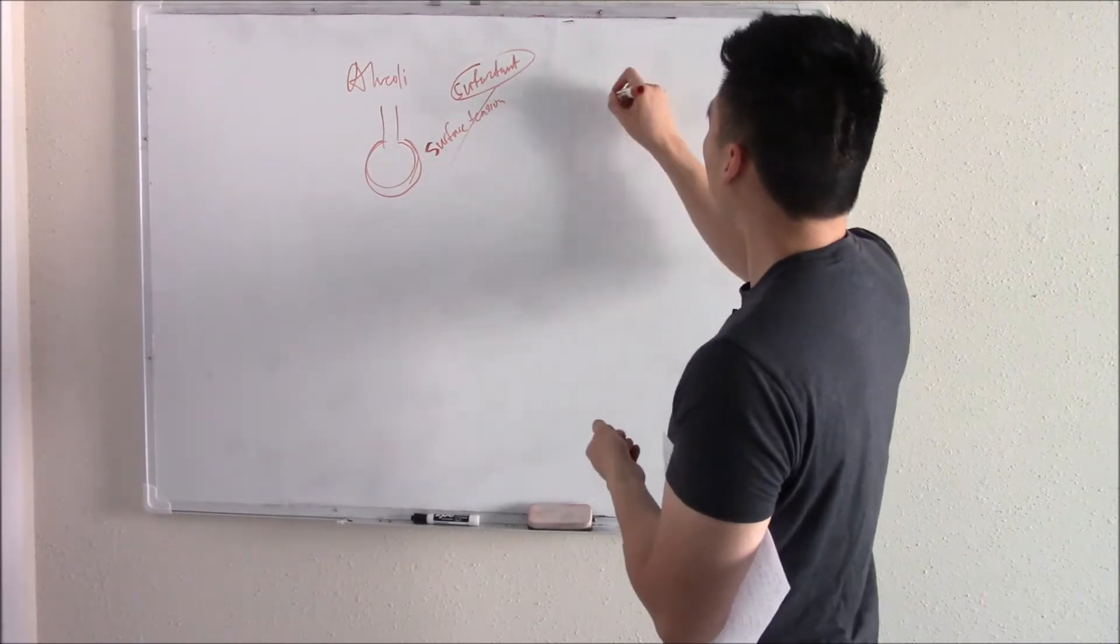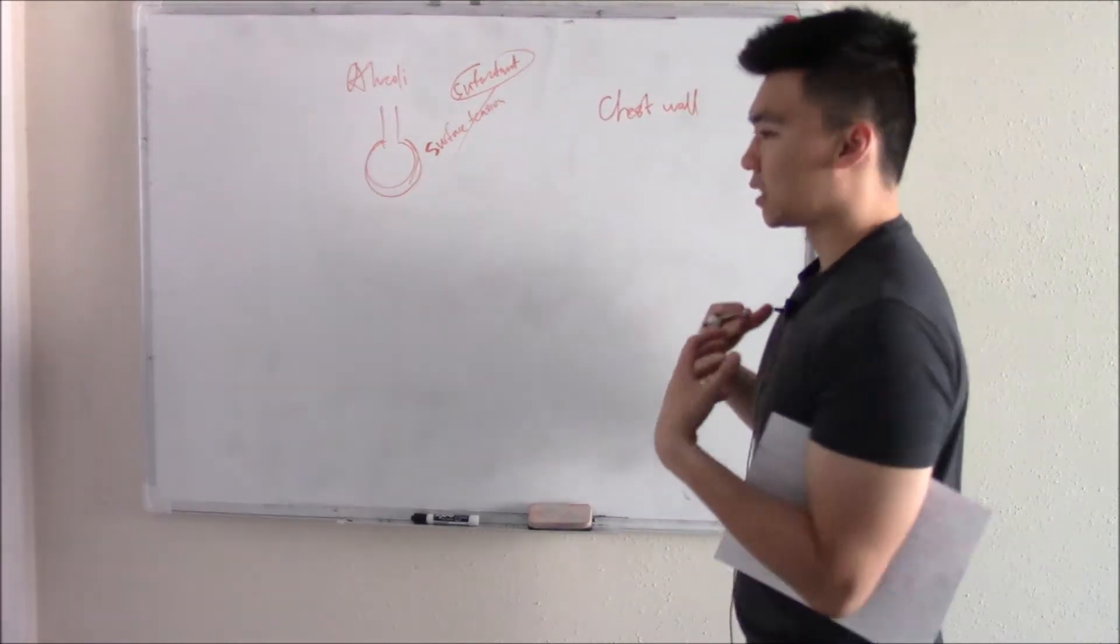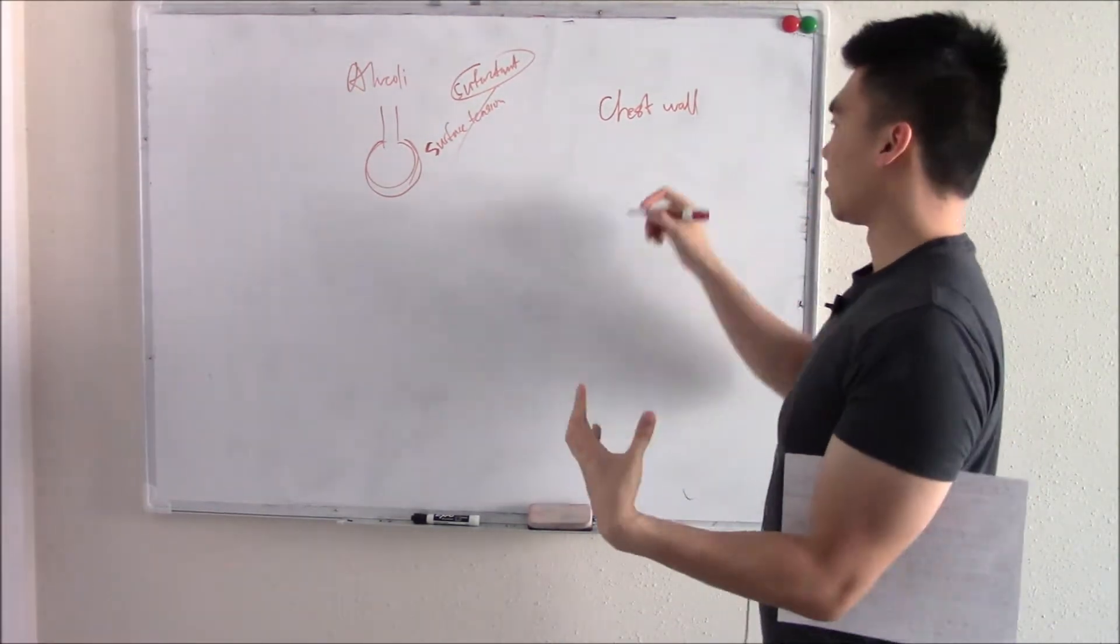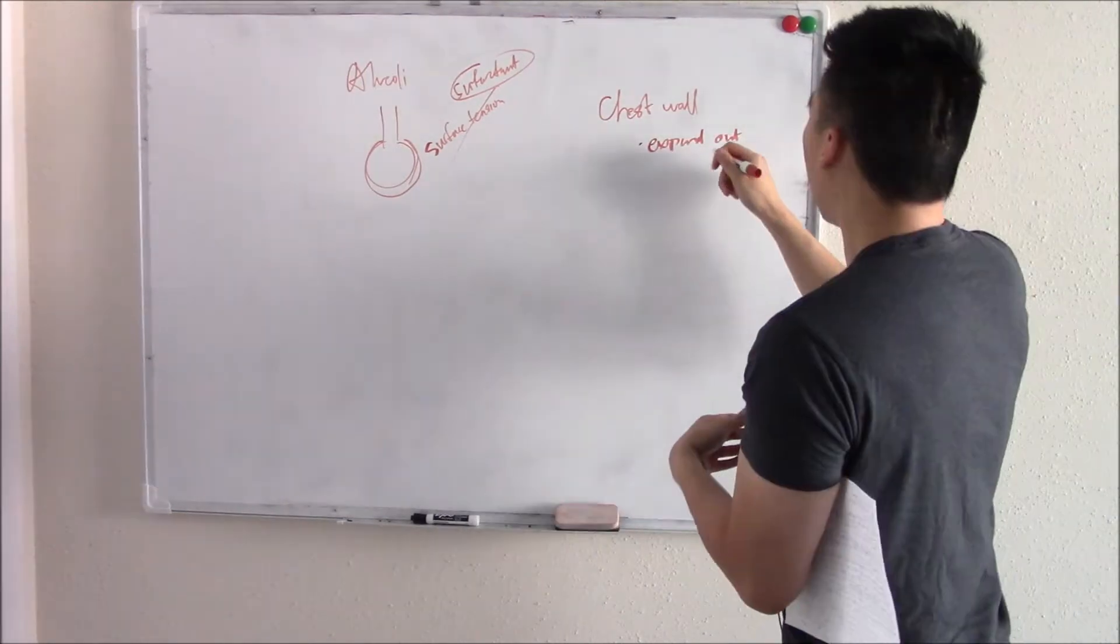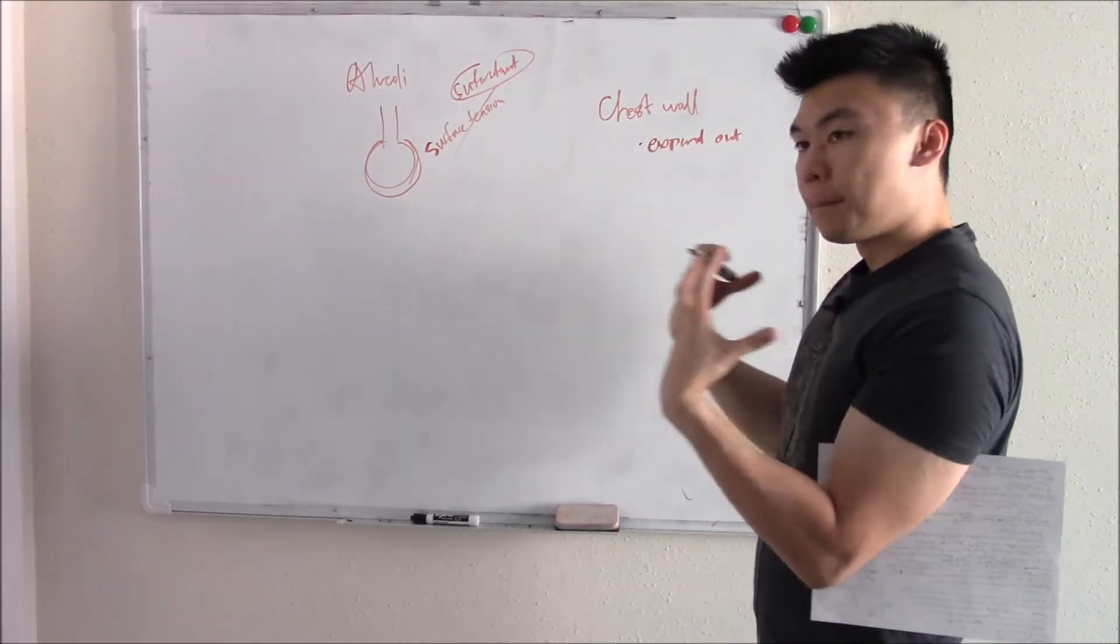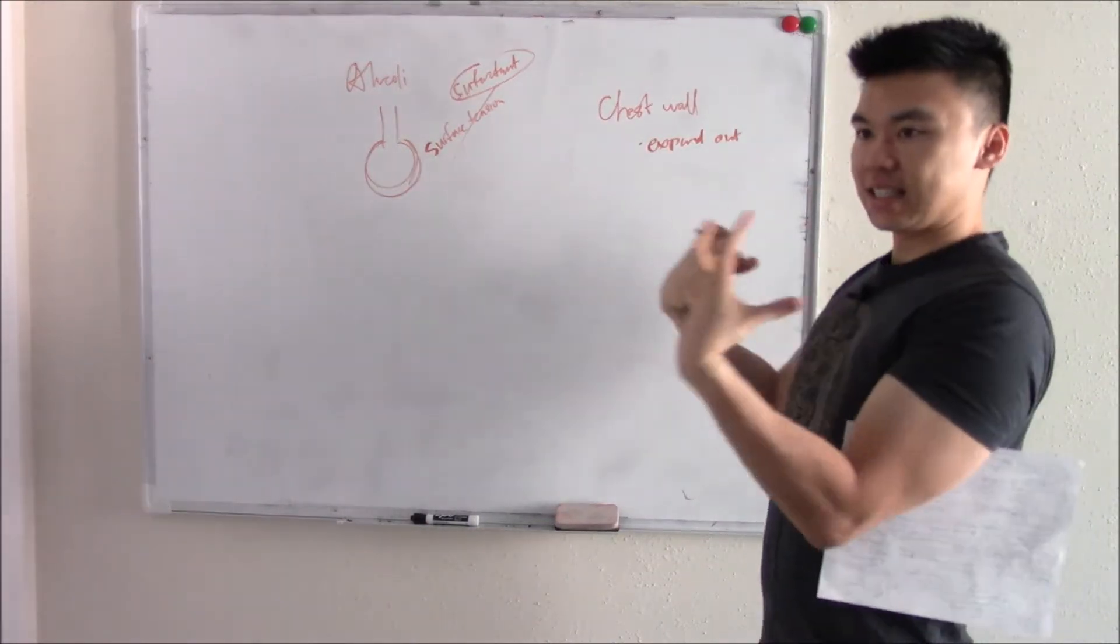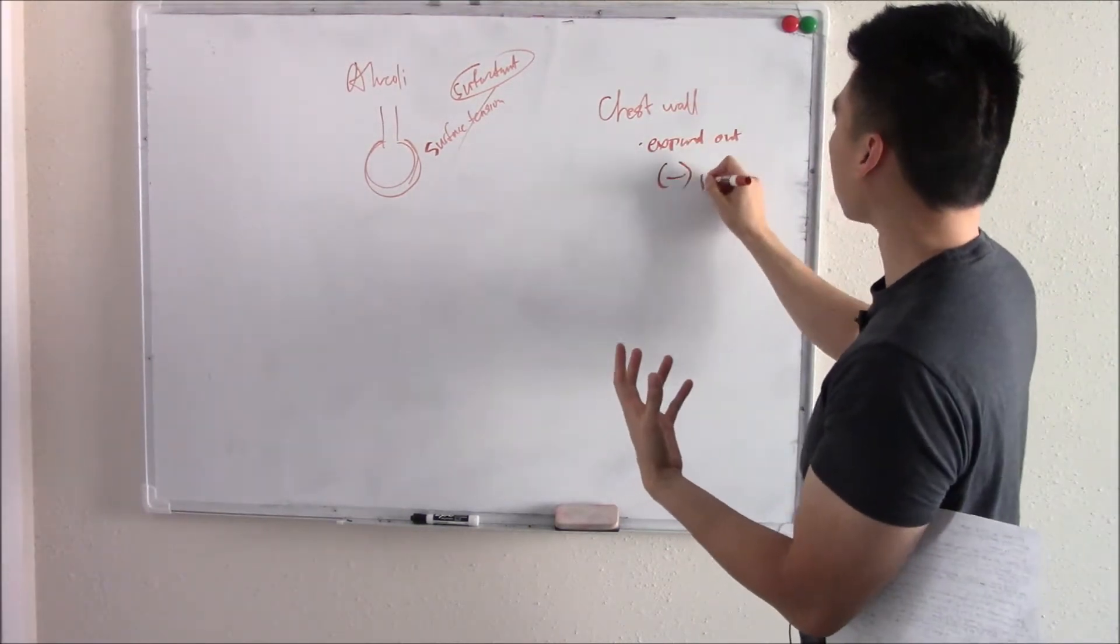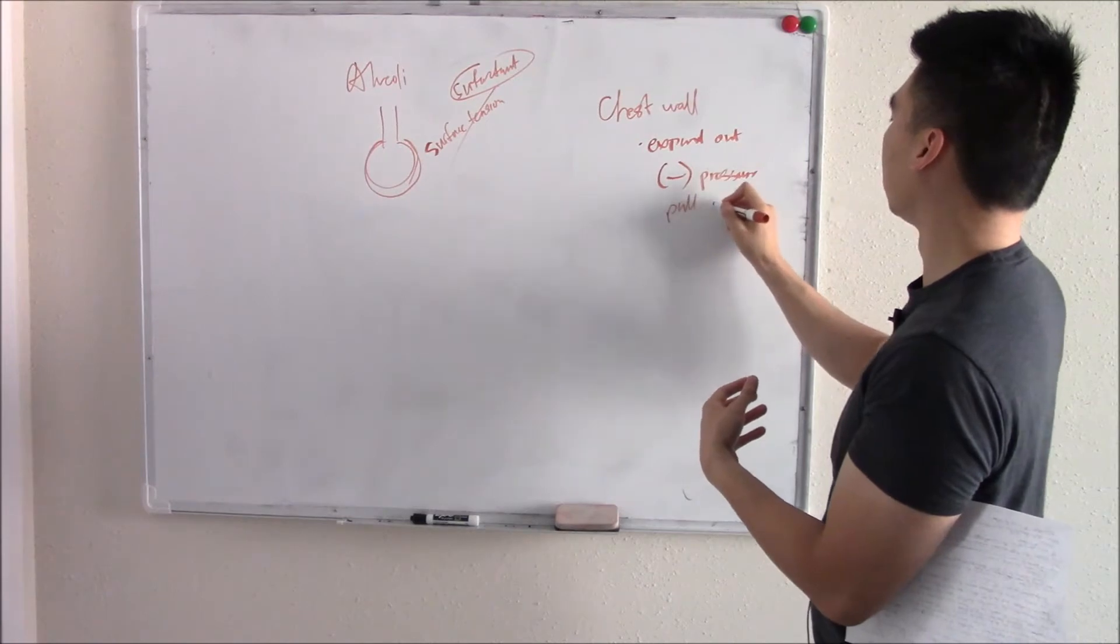Well, your chest wall has a natural tendency to expand, expand outwards. And when it expands outward, it pulls things out, kind of like a vacuum. It sucks things out. It has this negative pressure that pulls things out.